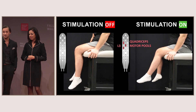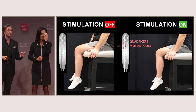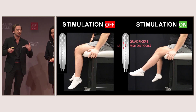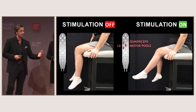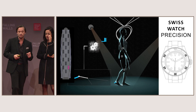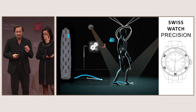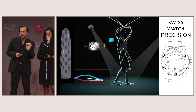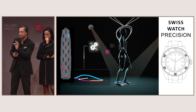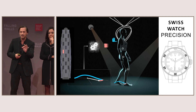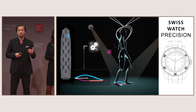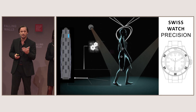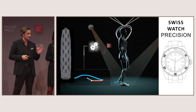But this is only one joint. Imagine you want to walk — you need to coordinate the activity of many different joints. So what we have to do is deliver bursts of electrical stimulation that are very precise in space and time, in order to synchronize the stimulation with the intended movement, really with the precision of a Swiss chronometer.